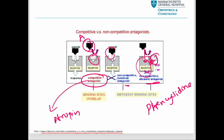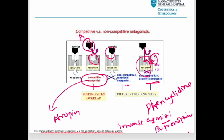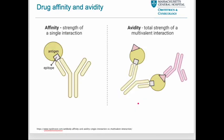An example of an inverse agonist is buprenorphine, an opioid used for pain management. It acts as an agonist at opioid receptors but also has inverse agonist properties at the same receptor. The inverse agonist activity can reduce the basal activity of receptors, providing a different pharmacological profile compared to neutral antagonists.